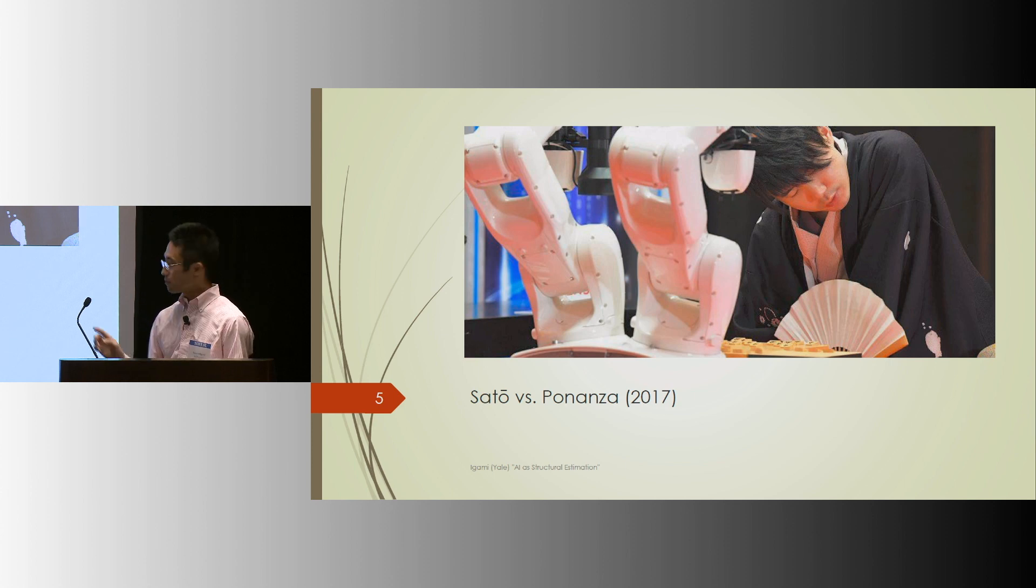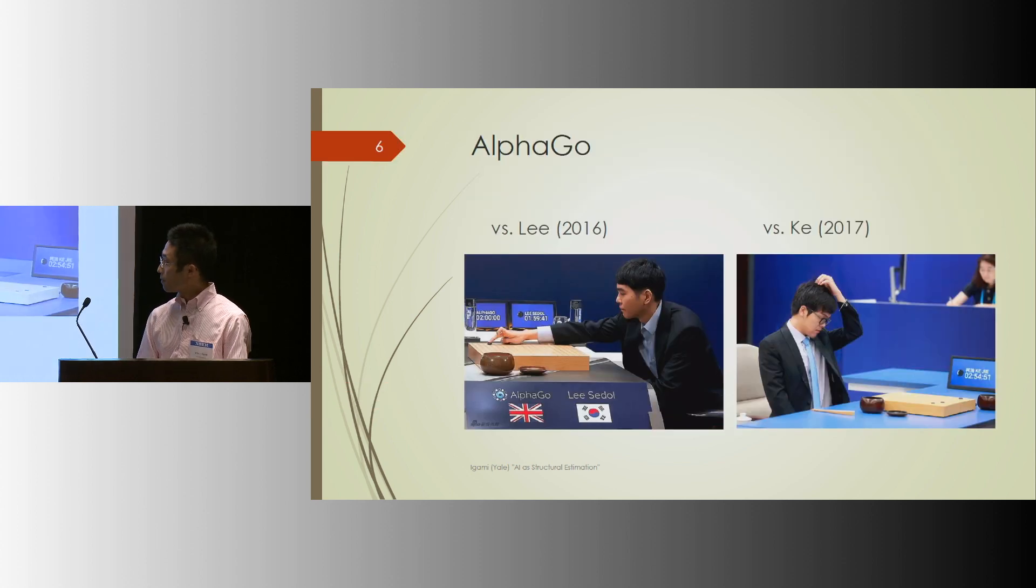...one of its successors called Bonanza then won two straight games from another champion, Saro. And finally, by now, everyone's familiar with the game of Go. AlphaGo was brutal, beating the European champion, Korean champion, and the world's best player in China. So humans are like, OK, we got beaten up, like completely.